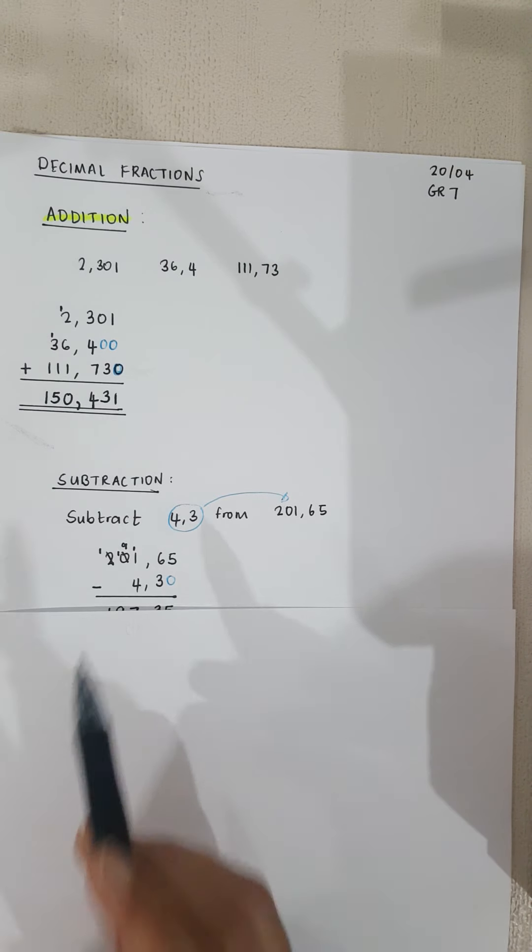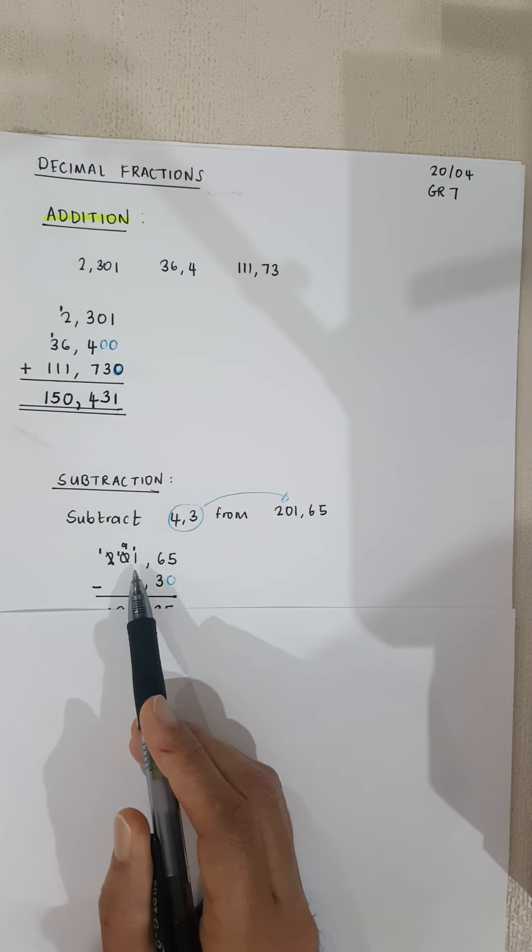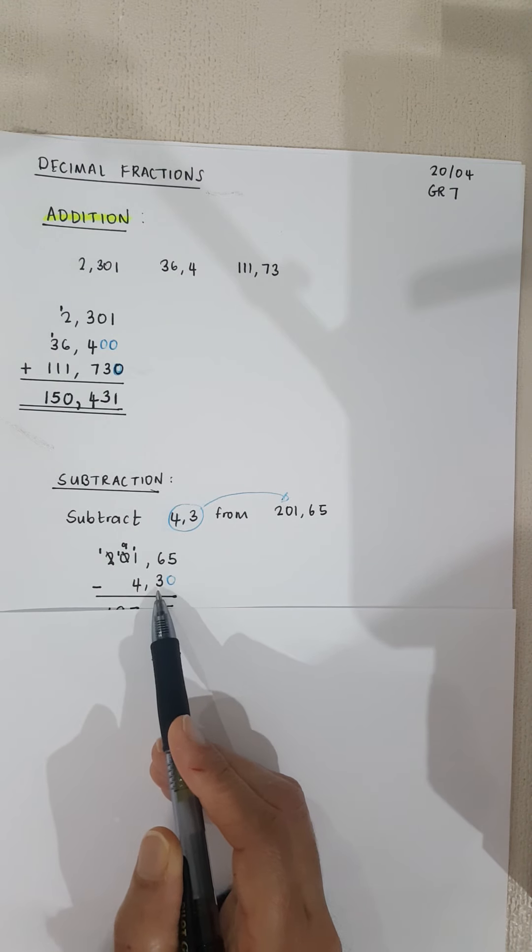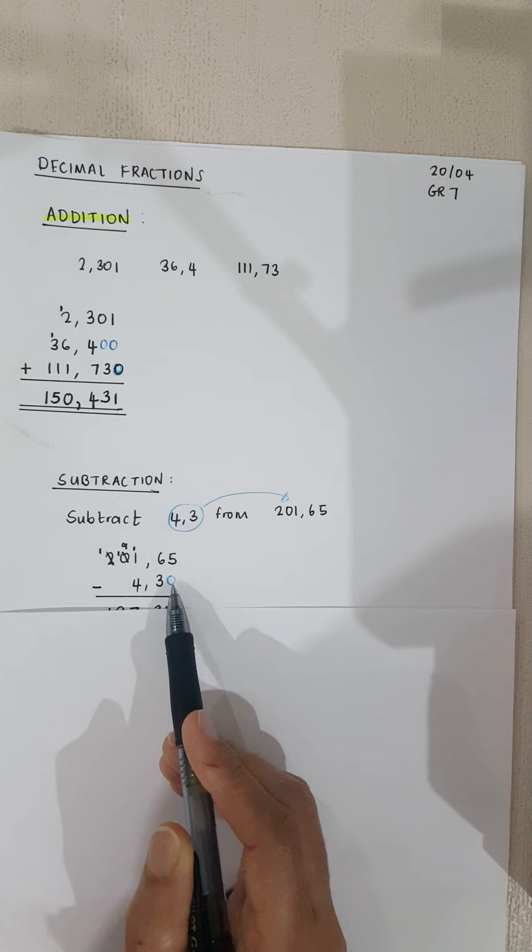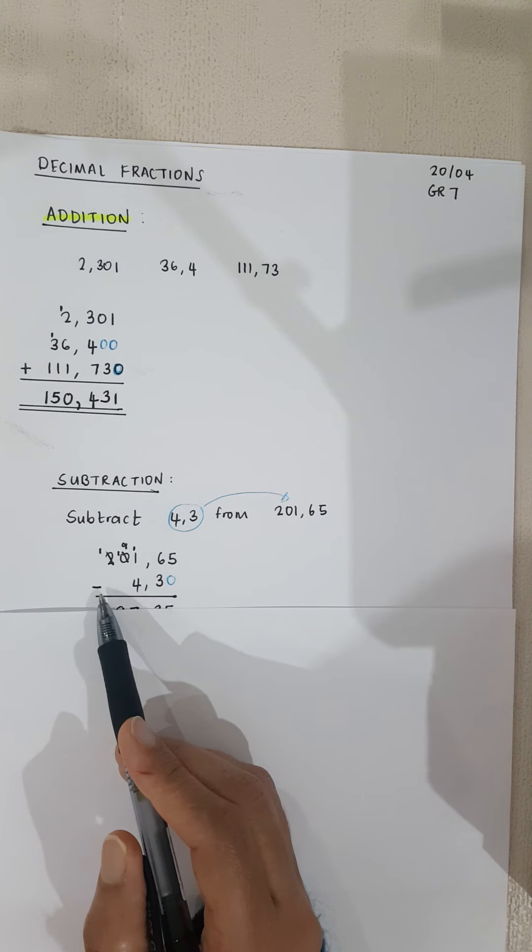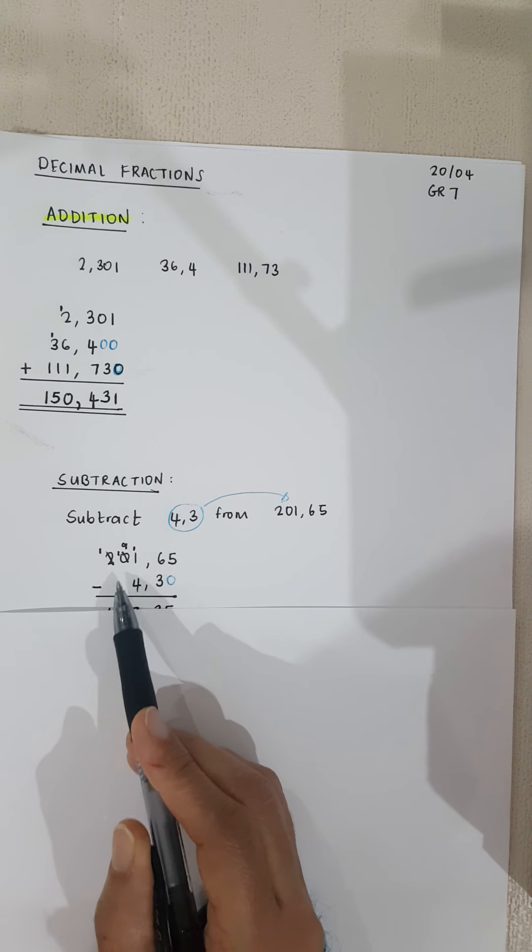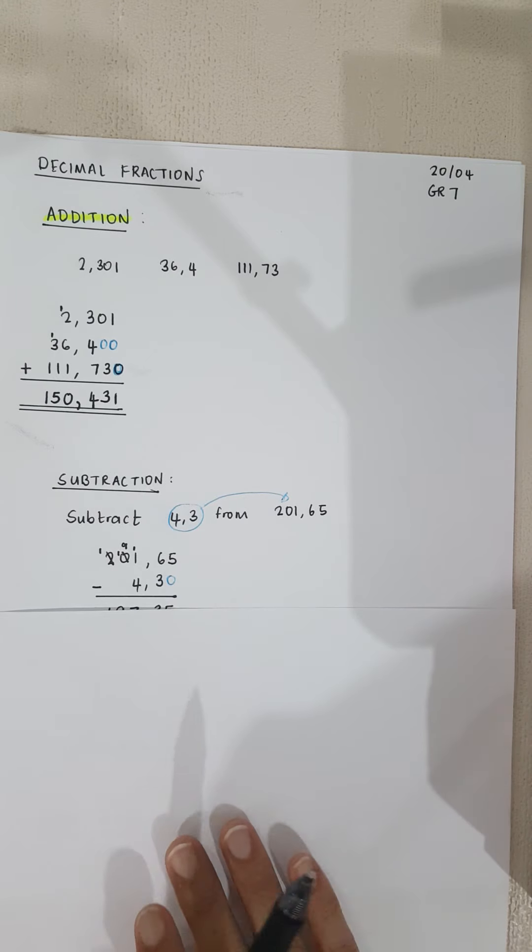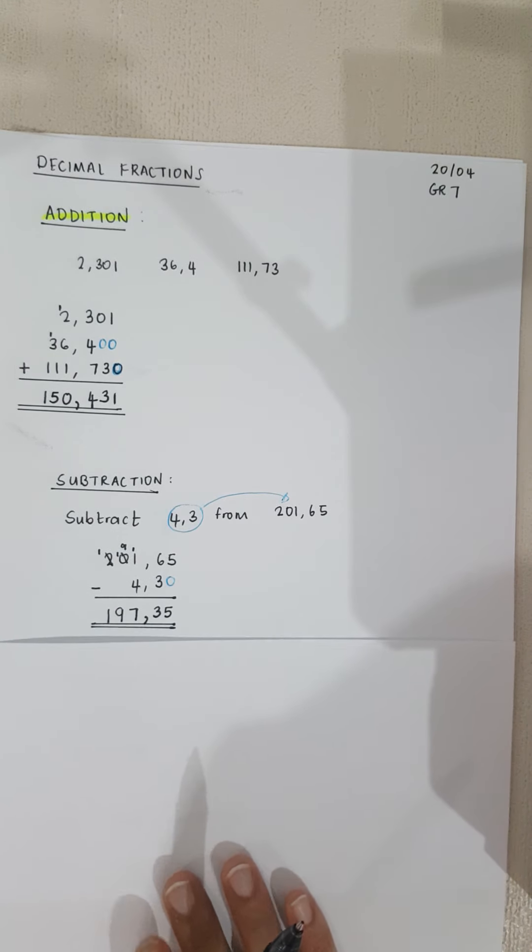Again, we're using a column method. I've got 201.65 minus 4.3. Look, I've added a zero to make it easy. Notice we have written the 4 in line with the 1 there. I have to write it in a column method, all matching: 201.65 minus 4.30.